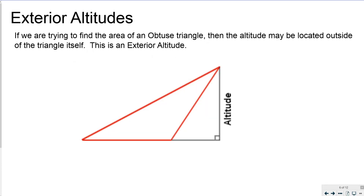Sometimes the altitude actually has to be outside of the triangle, because otherwise there's no way to make 90 degrees with the base. The gray segments represent fictional, imaginary sides, but they can still be used for calculations using the altitude to calculate the height of the triangle. You then use the red base — this section down here — together with the altitude to calculate the area of the triangle.